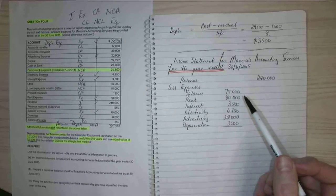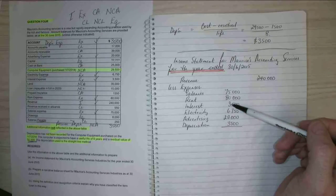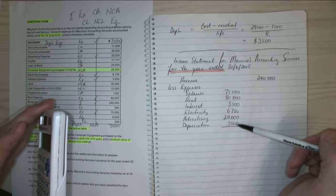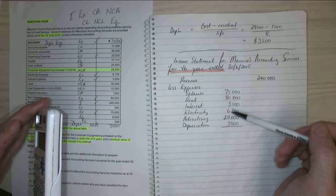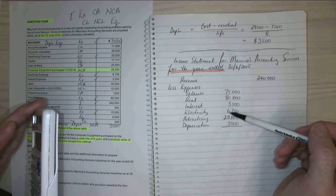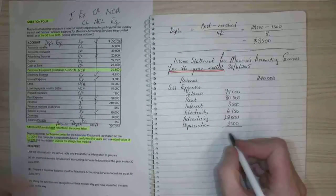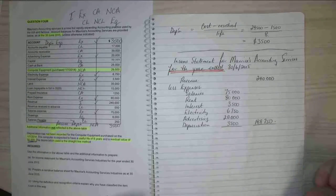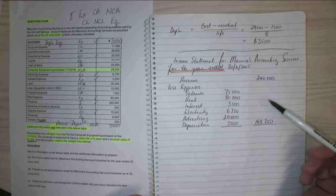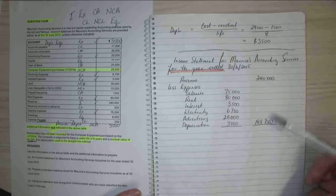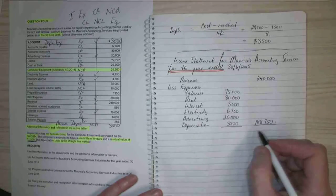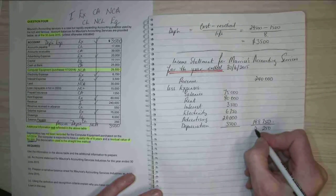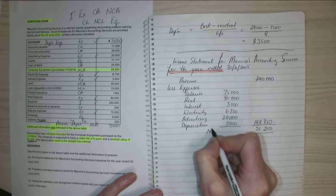Let's see who's fast on the calculator. Adding up all expenses: $75,000 salaries, $80,000 rent, $3,500 interest, $6,750 electricity, $20,000 advertising, $3,500 depreciation — total expenses of $188,750. Taking expenses away from revenue of $240,000 gives us net profit of approximately $51,250.